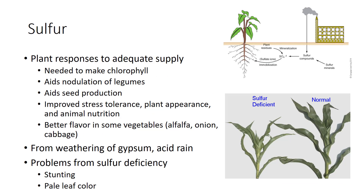Plants need less sulfur than other macronutrients, but it is still a crucial nutrient used in large amounts. Several proteins include sulfur, and it is needed for making chlorophyll. It aids in nodulation in legumes and seed production of all plants. Overall, sulfur improves protein and chlorophyll content, stress tolerance, animal nutrition, and the appearance of plant products. Alfalfa, members of the mustard family including cabbage, and members of the onion family need much sulfur. The pungent flavors of those plants are derived from sulfur compounds. The famous Vidalia onions are special varieties grown on low-sulfur soils in Georgia to be less pungent. Most soil sulfur comes from the weathering of sulfate minerals such as gypsum, creating a sulfate ion. Organic matter contains 70% to 90% of the soil sulfur. Plants that are short of sulfur may be stunted, and older leaves will be pale green like those of nitrogen-deficient plants.